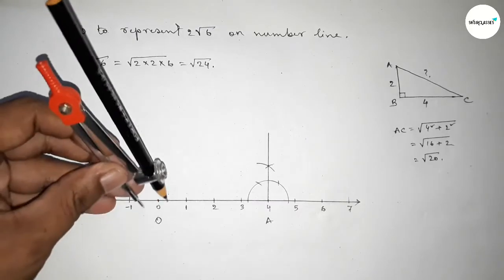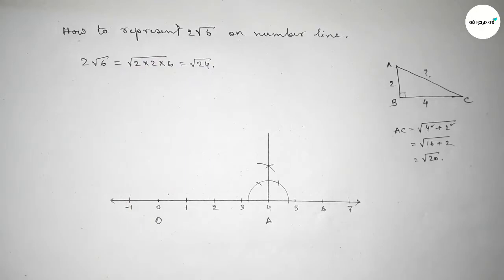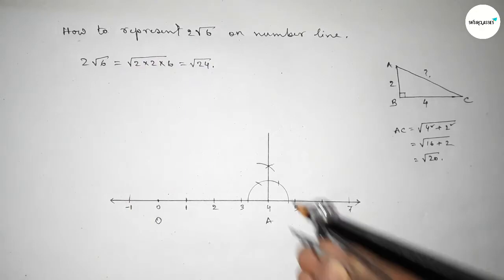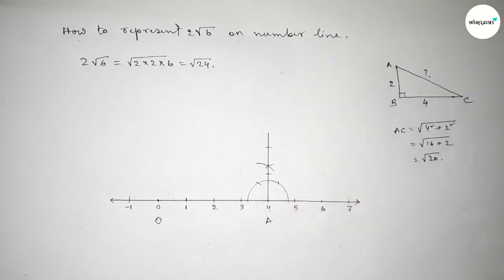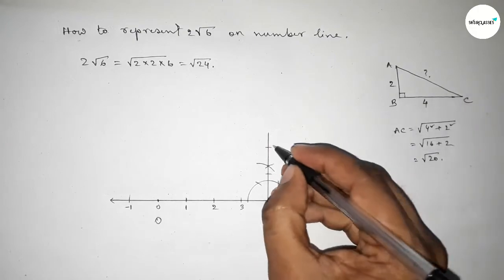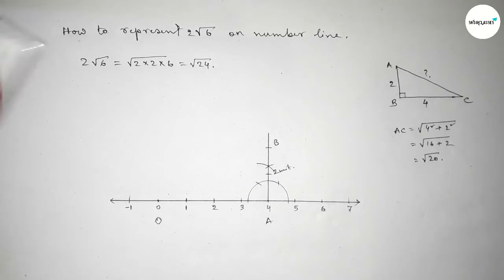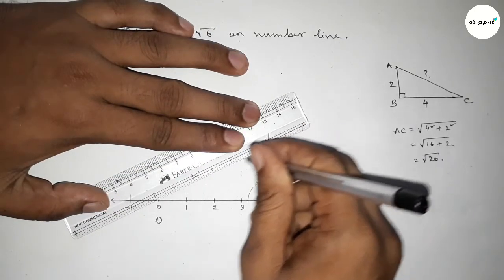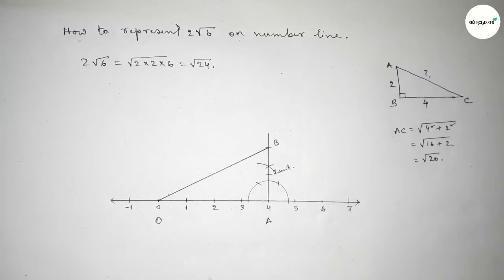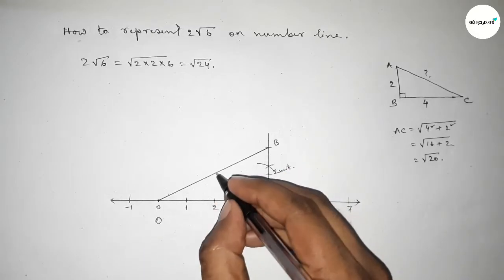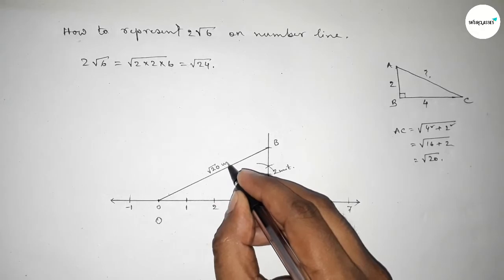Take the length between any two numbers using the compass and cut it here two times, giving a length of two units. Take point B and join the line. This hypotenuse is therefore √20 units.